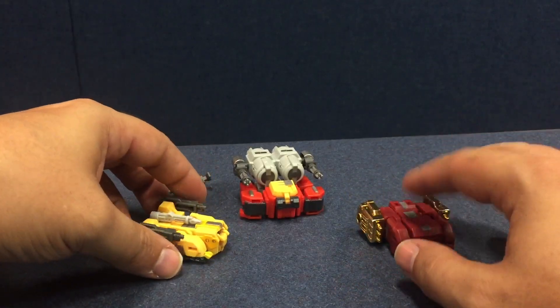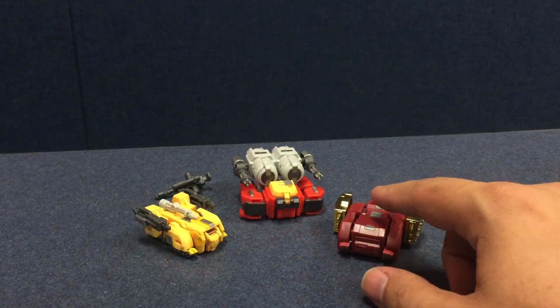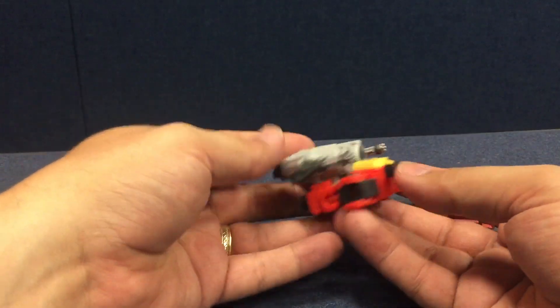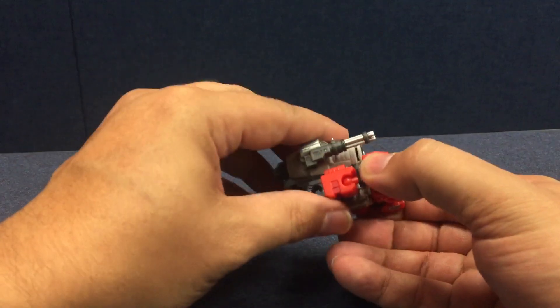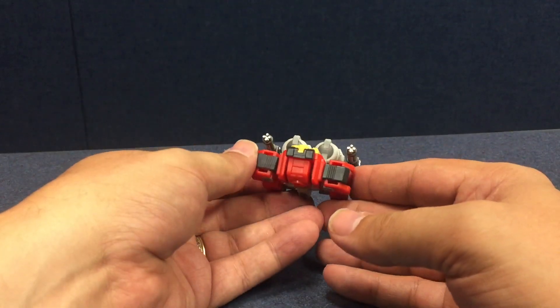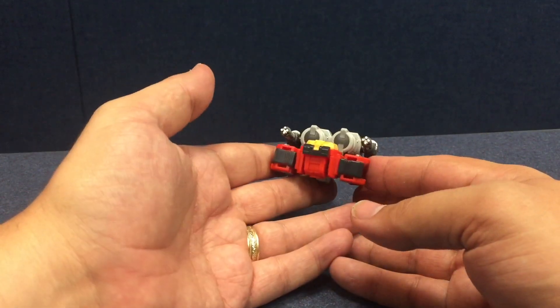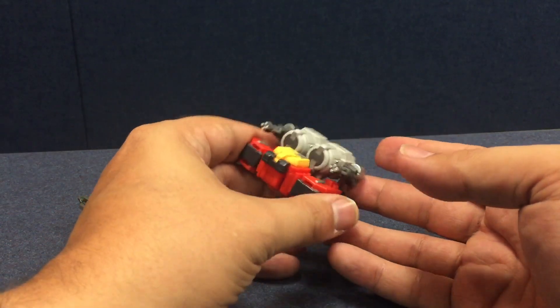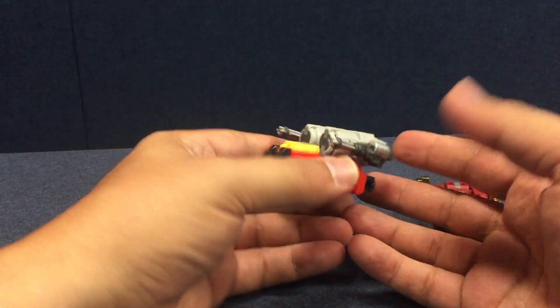Before we get into their alt modes, let's cover Sonatech first, who is obviously their version of Blaster. This is based on, I think, his alt mode from the Blaster Spotlight from IDW. It's kind of a tank-ish thing. It's one of those, it's a tank because we say it's a tank, but it's fairly accurate to the source material.